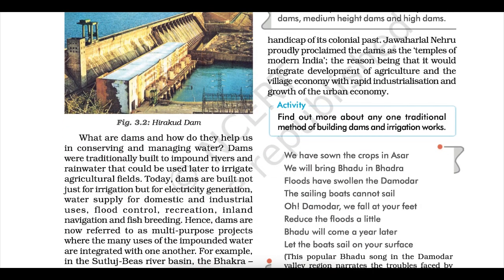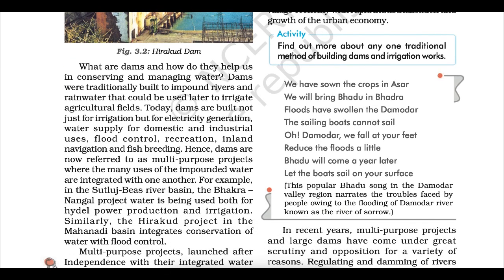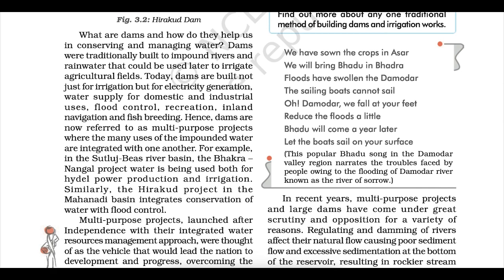Dams were traditionally built to impound rivers and rainwater for later irrigation of agricultural fields. Today dams serve not just irrigation but also electricity generation, domestic and industrial water supply, flood control, recreation, inland navigation and fish breeding — hence they are referred to as multi-purpose projects. For example, in the Satlej-Beas river basin, the Bhakra-Nangal project uses water for both hydroelectric power production and irrigation. Similarly, the Hirakud project in the Mahanadi basin integrates conservation of water with flood control.